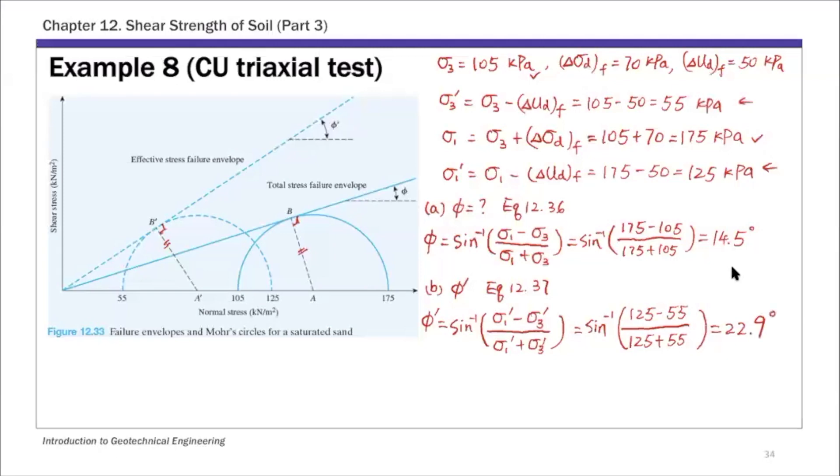The last part, part c, is the angle of the failure plane. This angle of failure plane is defined with respect to the major principal stress plane, which is the horizontal plane. This theta angle is 45 plus phi prime over 2.